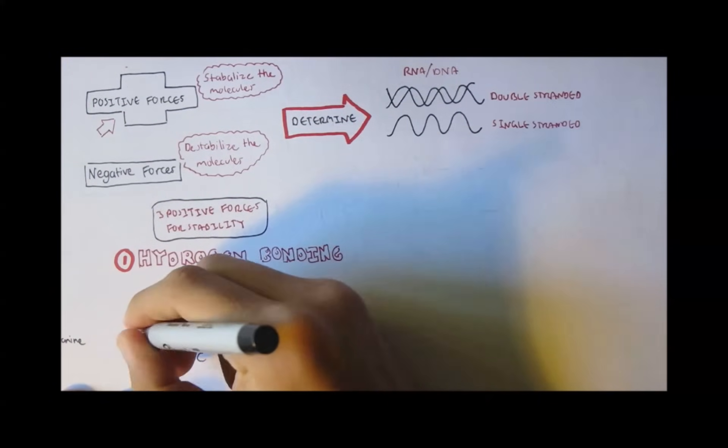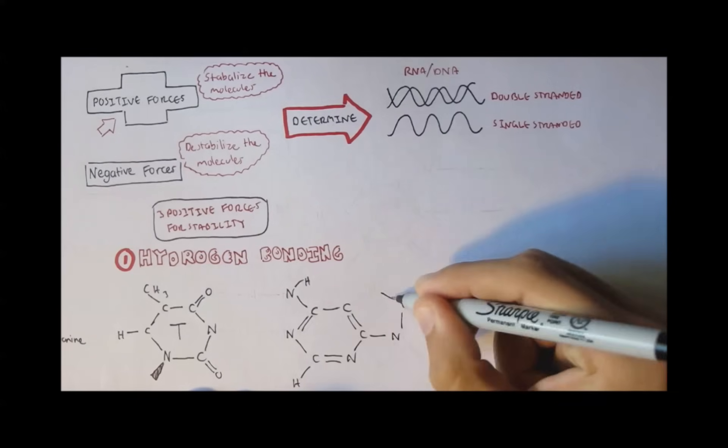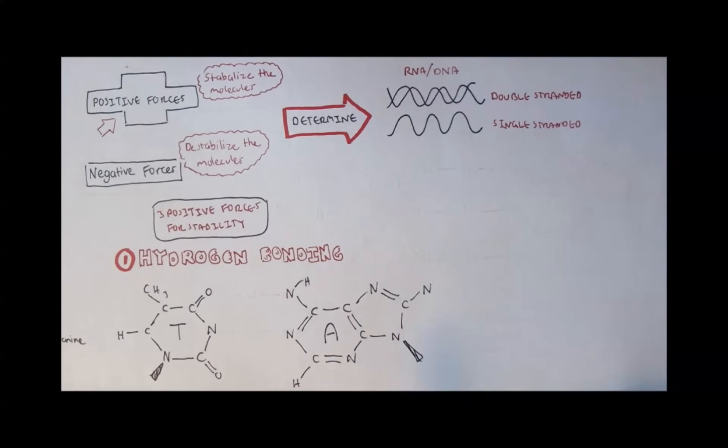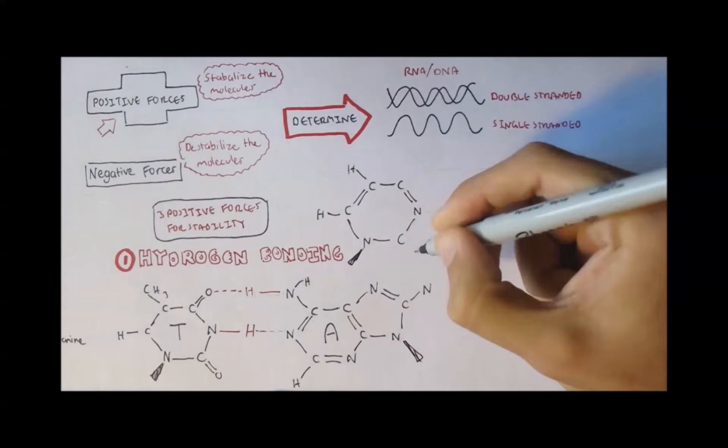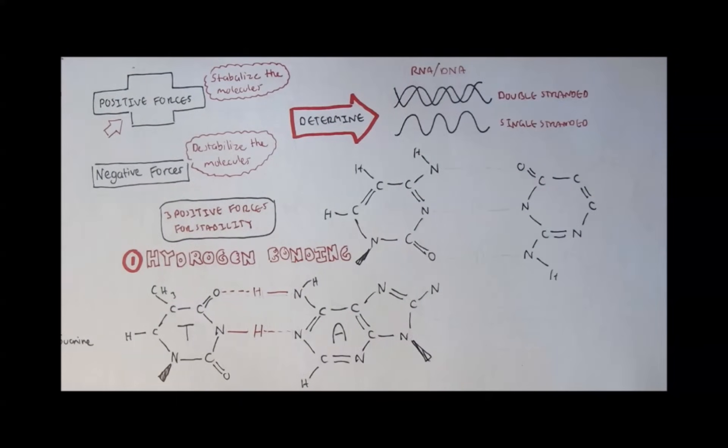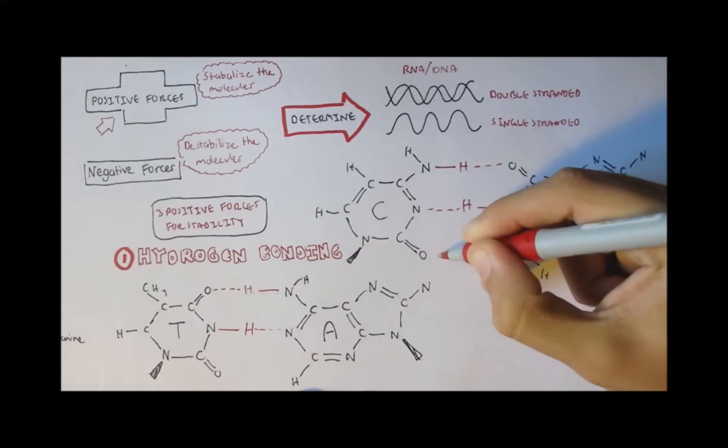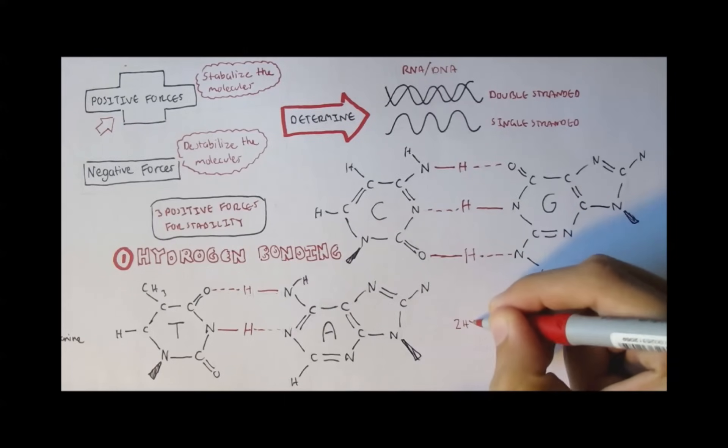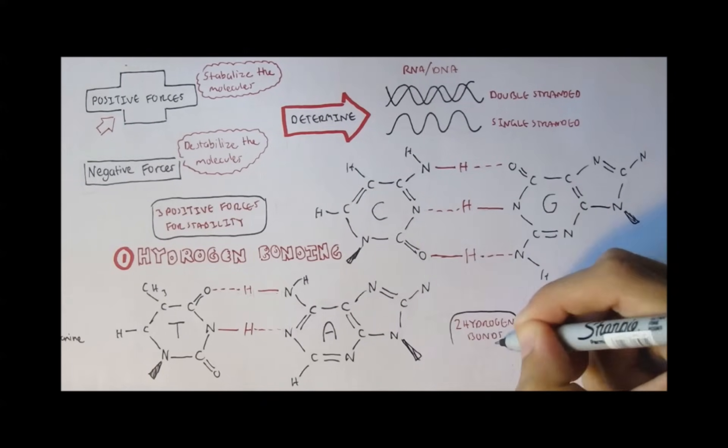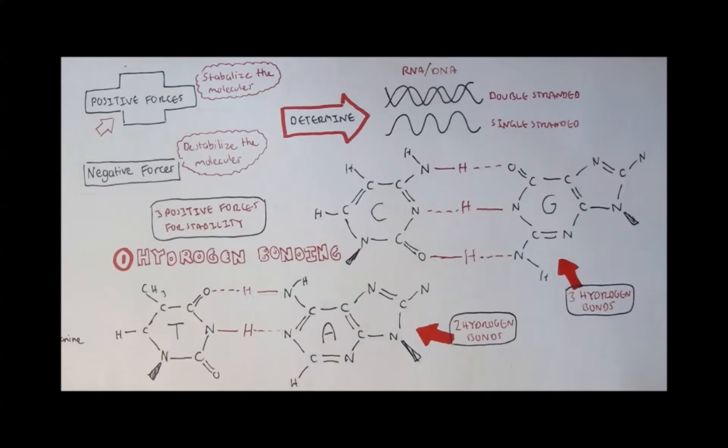So here we have a single-ringed thymine and a double-ringed adenine, and it has hydrogen bonds here and here. Note the number of hydrogen bonds. And on the other pair of bases also attached to hydrogen bonds is the guanine and cytosine, and the hydrogen bonds are here, here, and here. You might have noticed that thymine and adenine attach with two hydrogen bonds, whereas guanine and cytosine attach with three hydrogen bonds. So obviously cytosine and guanine are much stronger than adenine and thymine because it has more hydrogen bonds.